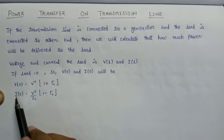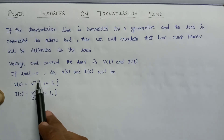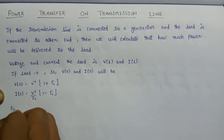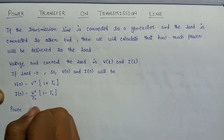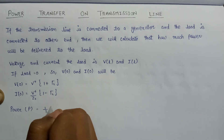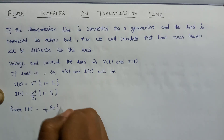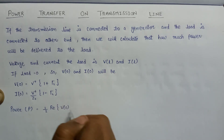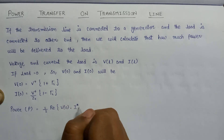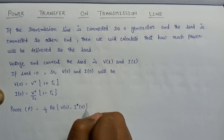So this is the expression for voltage and current when the load position equals zero. Now let's calculate the power. The power P is equal to one-half multiplied by the real part of the voltage at load position zero and the current at load position zero.